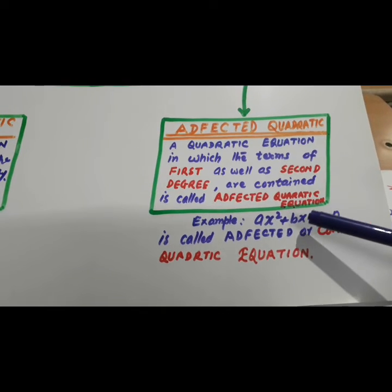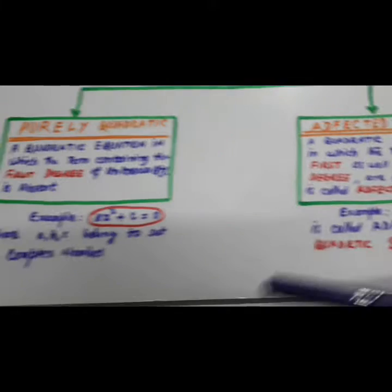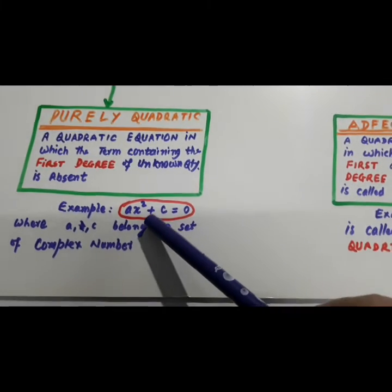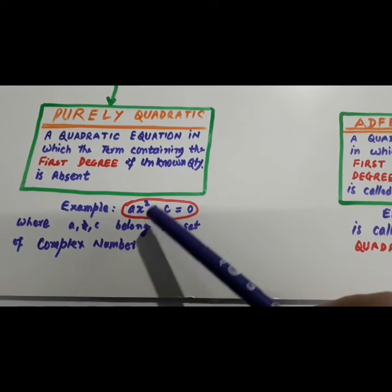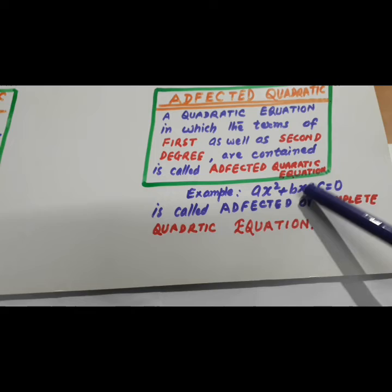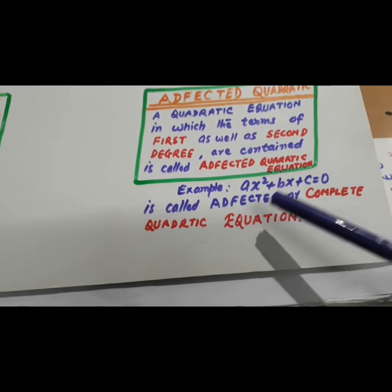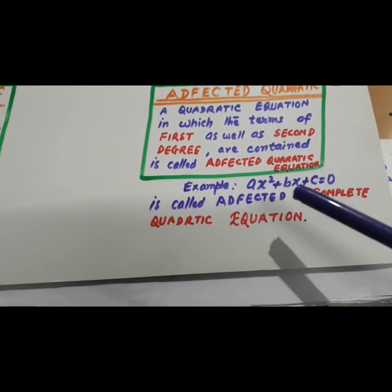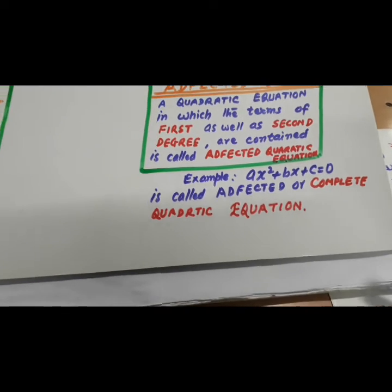Ax square plus Bx plus C equal to zero. In this case, x square is there, x is there and constant is also there. This is called defected or complete quadratic equation.